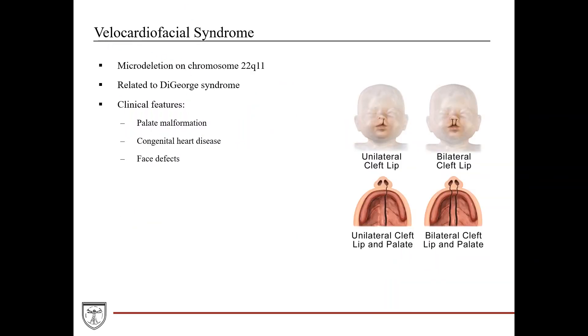Velocardiofacial syndrome is a result of a microdeletion on chromosome 22Q11, which is related to DiGeorge syndrome, which we'll talk about on the next slide. Very similar to DiGeorge syndrome, they can have palate malformation, congenital heart disease, and face defects.